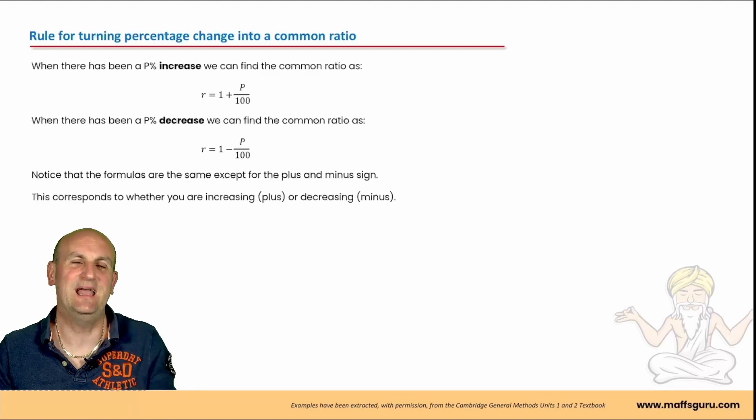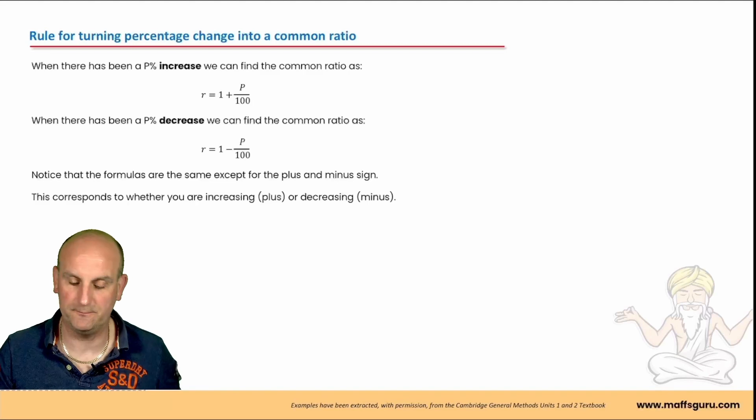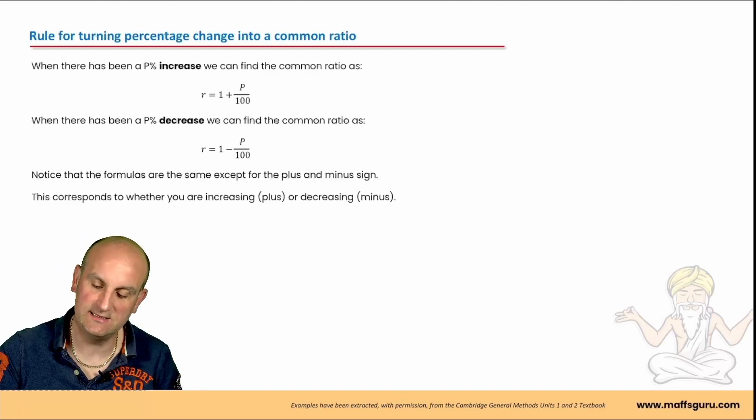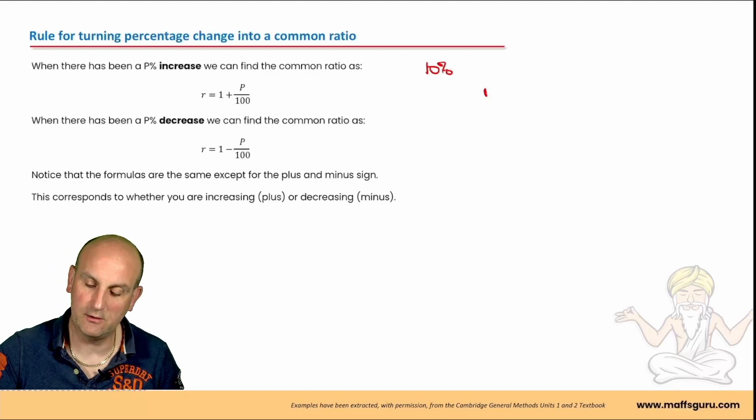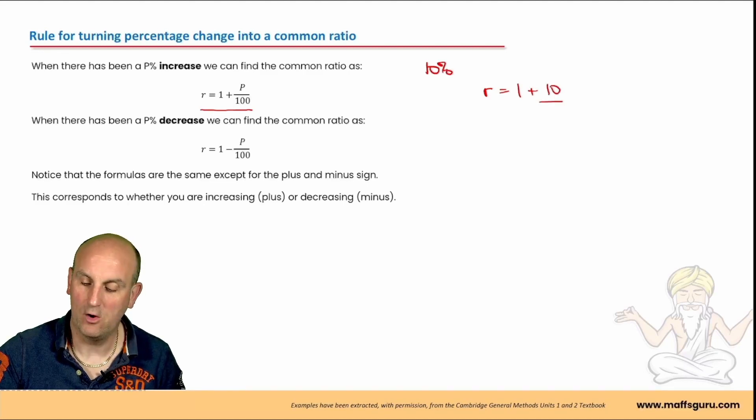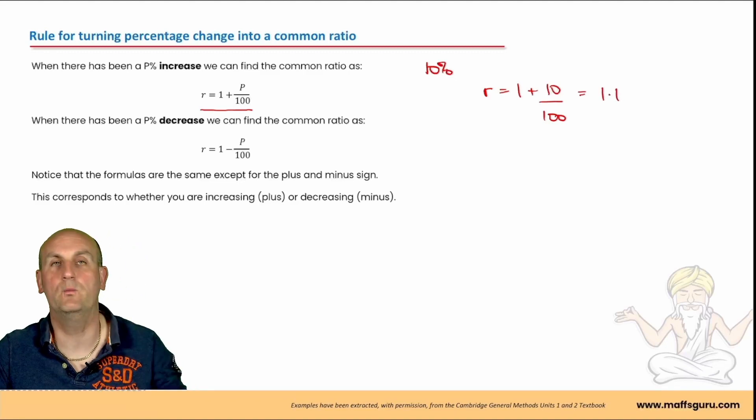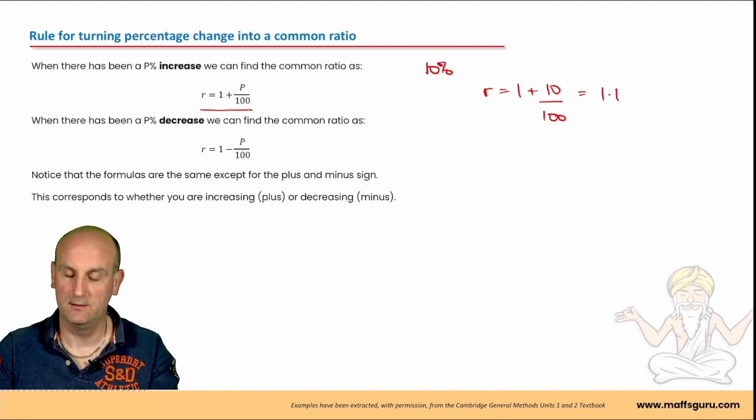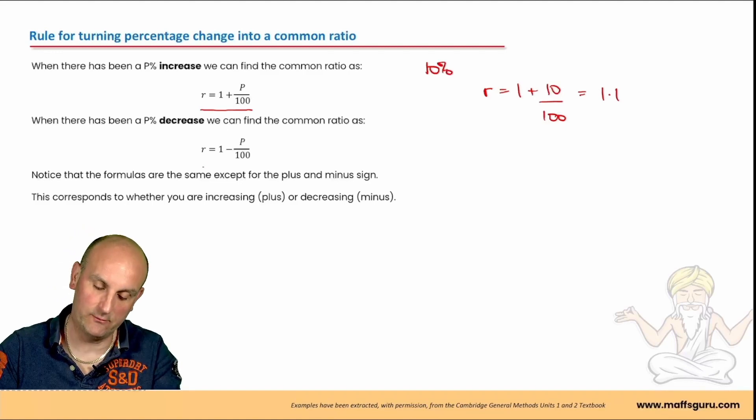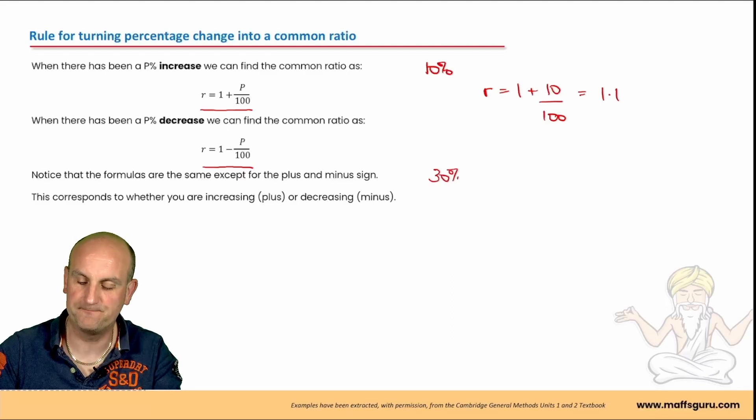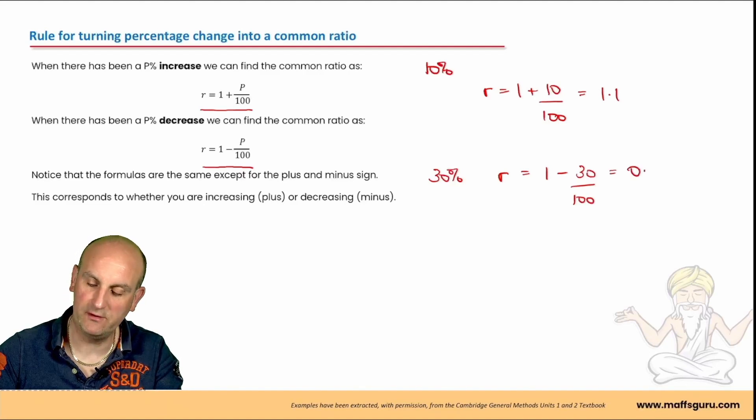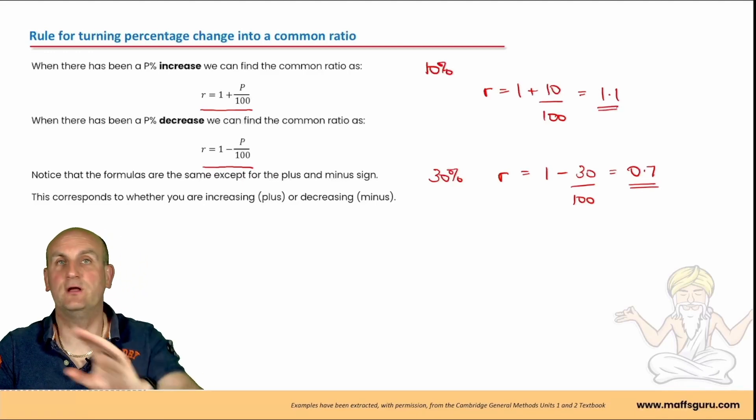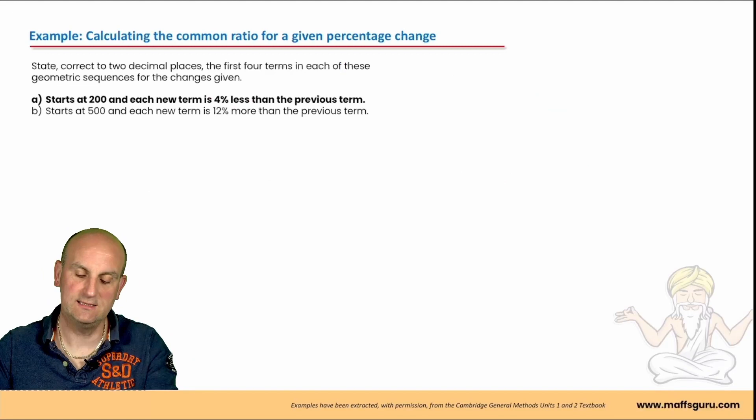Now, I know a lot of you out there like rules, and this is another way of doing it. I've just said that basically a multiplier is another word for the common ratio. So if I've got a percentage increase of 10%, then basically we can say that my common ratio is given by 1 plus P, which is 10, on 100. And that will also give you 1.1. So it's totally up to you how you do it. The formula I've just shown you is exactly what I was just doing a moment ago. If you want to do a decrease, say we did a decrease of 30%, then I would do R is equal to 1 minus 30 on 100, which would give you 0.7. Right, so knowing how to go from percentage change into common ratios is going to make life a little bit easier.